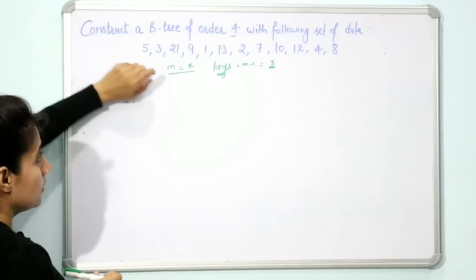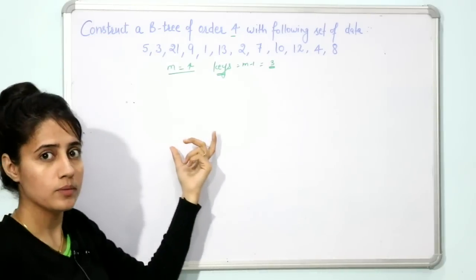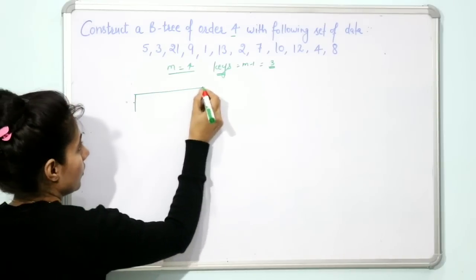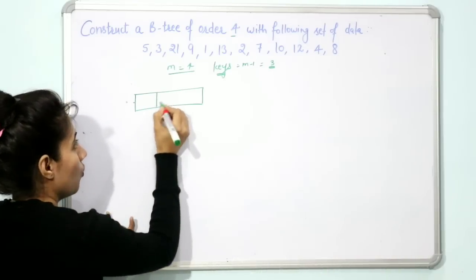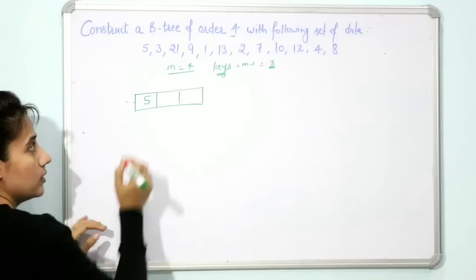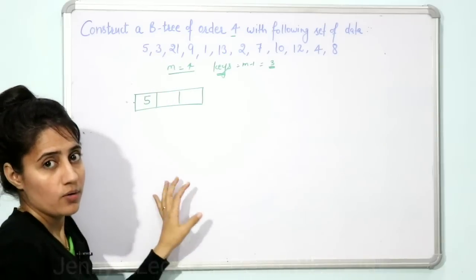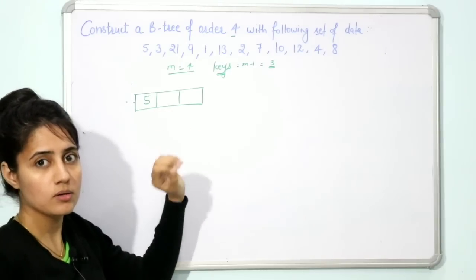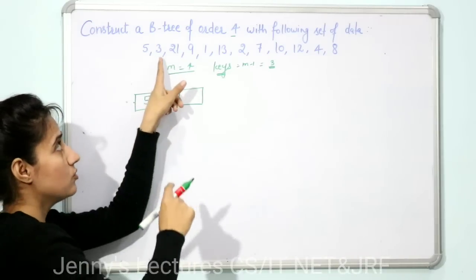First, scan the given set of data from left to right. The first number is 5. We will insert 5 into the B-tree. Initially we have an empty B-tree, so one node will be created, and that node can have a maximum of 3 keys. The next number is 3. All numbers in a node will be stored in ascending order, so next number 3 needs to be placed correctly.